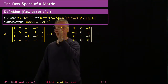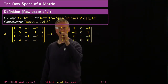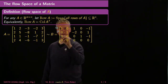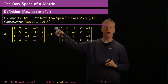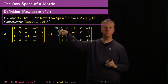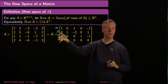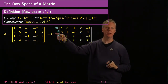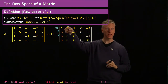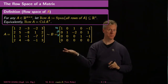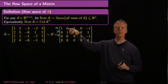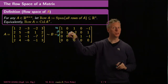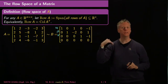Suppose I had alpha times the first vector plus beta times the second vector plus gamma times the third vector, and that linear combination equaled zero. Then looking at the first coordinate, I'd have alpha times one plus zero plus zero equals zero, which means alpha equals zero. Looking at the second coordinate, beta plus zero plus zero equals zero, so beta equals zero, and similarly gamma equals zero. So the only way alpha times the first row plus beta times the second row plus gamma times the third row equals zero is if alpha, beta, and gamma are all individually zero.